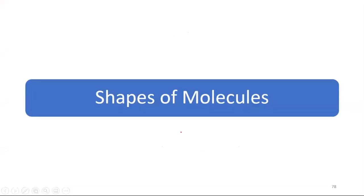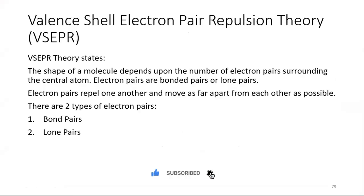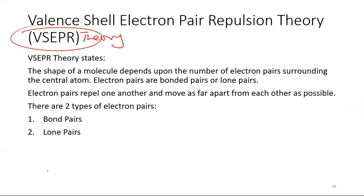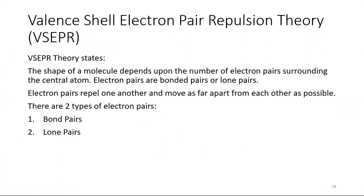Let's talk about shapes of molecules. First of all, we have VSEPR theory — the Valence Shell Electron Pair Repulsion theory. This theory says that the shape of molecules depends upon the number of electron pairs surrounding the central atom.